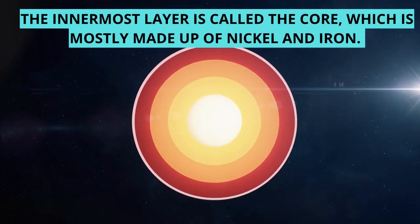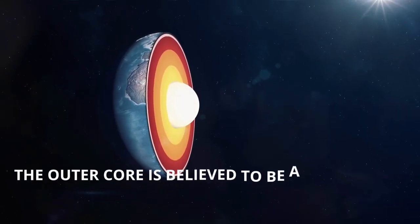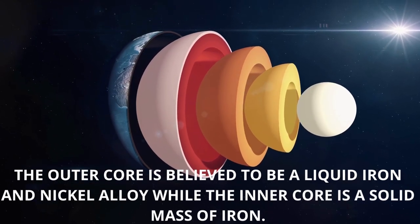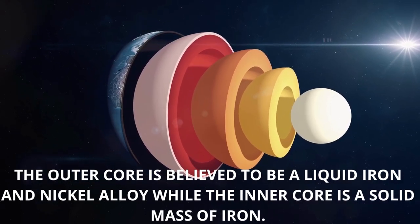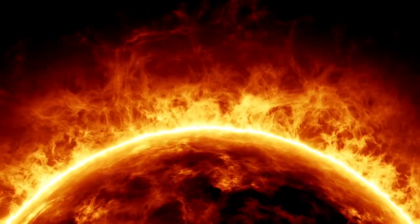The innermost layer is called the core, which is mostly made up of nickel and iron. It is composed of two parts. The outer core is believed to be a liquid iron and nickel alloy, while the inner core is a solid mass of iron. The inner core is thought to spin within the liquid outer core, creating a magnetic field that protects the Earth from solar radiation.